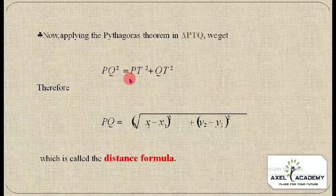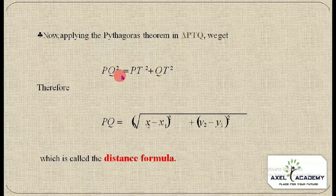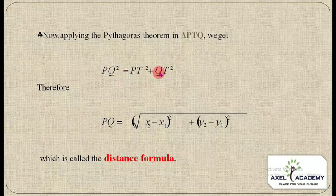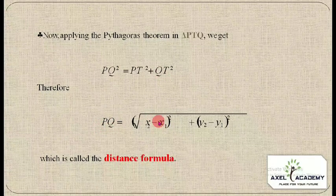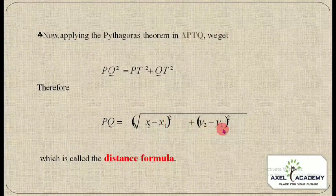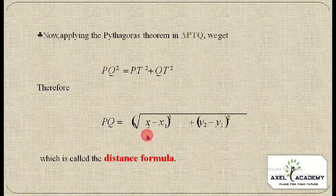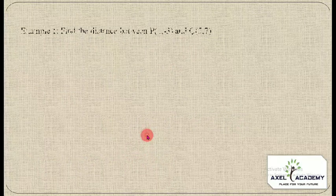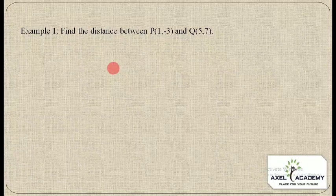Applying the Pythagorean theorem to triangle PTQ: PQ² = PT² + QT². Therefore, PQ = √[(x₂ − x₁)² + (y₂ − y₁)²]. This is the distance formula.